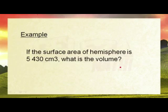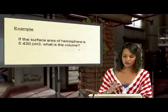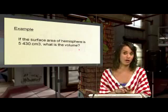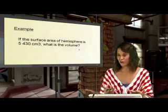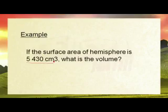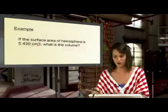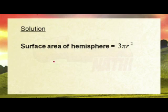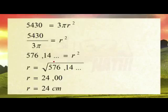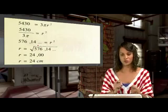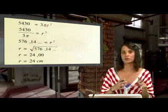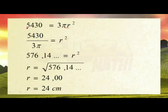Next example: if the surface area of a hemisphere is 5,430 centimeters squared, what is the volume? We need the radius to find the volume, but we're not given it directly. We do have the surface area, so we'll substitute into the surface area formula: 3 pi r squared equals 5,430, and solve for r.